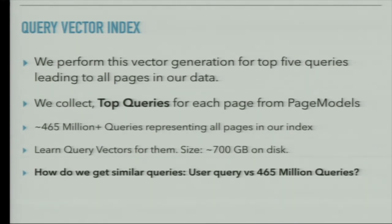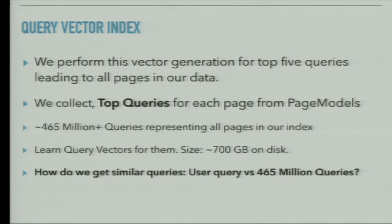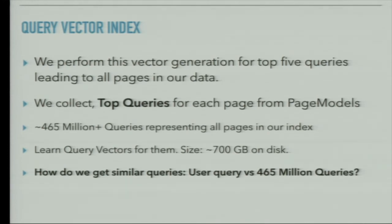We create a query vector index. Given our traditional index with all documents, we have all queries and their vectors and perform a query vector lookup. Since there are too many queries to index all of them, we pick the top five queries that best represent each page — we call them top queries. From our page models we get this data, resulting in roughly 465 million queries representing all pages in our index. We learn query vectors for each one of them. If you dump the whole system to disk, it's around 700 gigabytes.